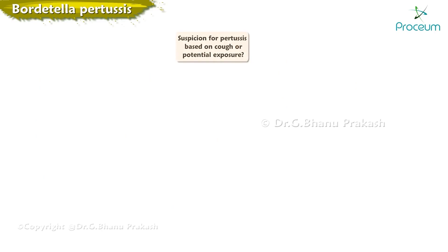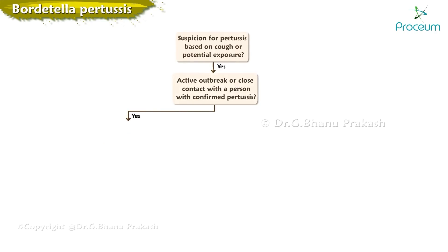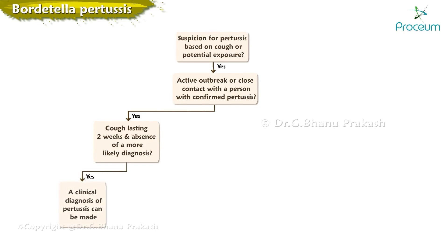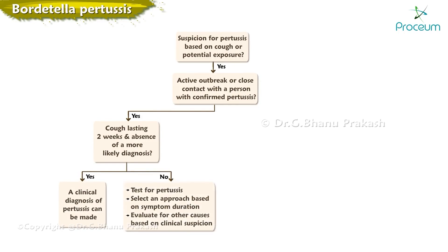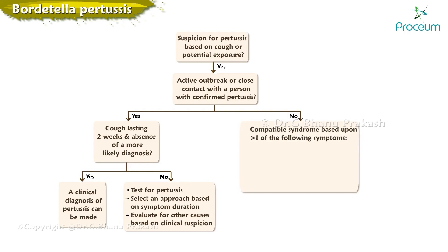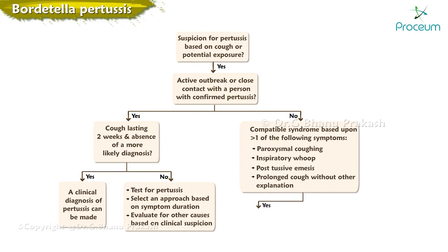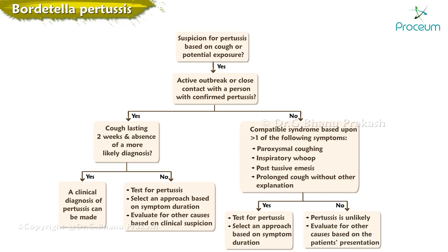Suspicion for pertussis is based on cough or potential exposure. If there is an active outbreak or close contact with a confirmed pertussis case, and cough lasting two or more weeks with no more likely diagnosis, a clinical diagnosis can be made; otherwise, test for pertussis selecting an approach based on symptom duration. If there is no active outbreak or close contact, look for a compatible syndrome — paroxysmal coughing, inspiratory whoop, post-tussive emesis, or prolonged cough without other explanation — and test accordingly. If symptoms are absent, pertussis is unlikely.